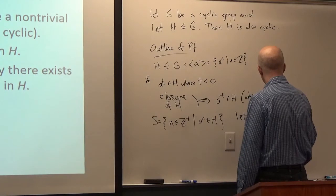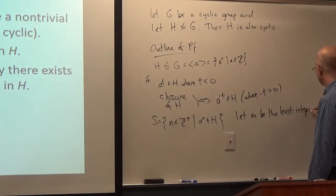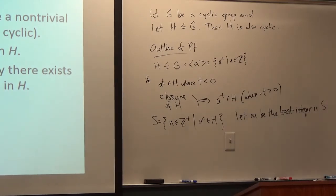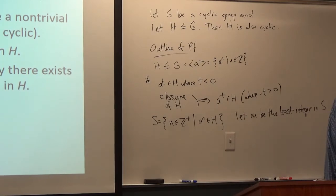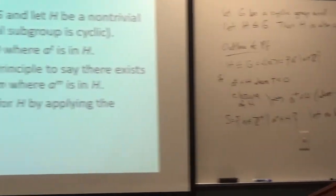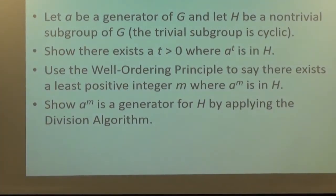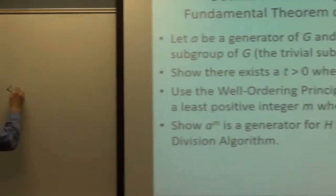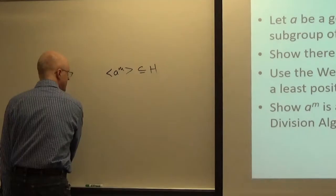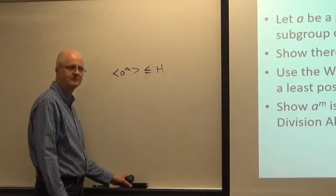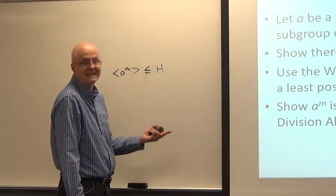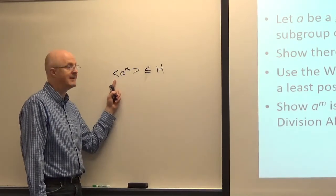Let m be the least integer in S, so A^m is in H—m is the smallest positive power of A that's in H. The idea is that A^m must be a generator of H. Since A^m is in H and H is a subgroup, by closure the cyclic subgroup generated by A^m is a subgroup of H.